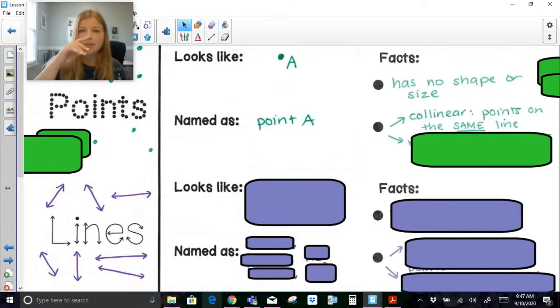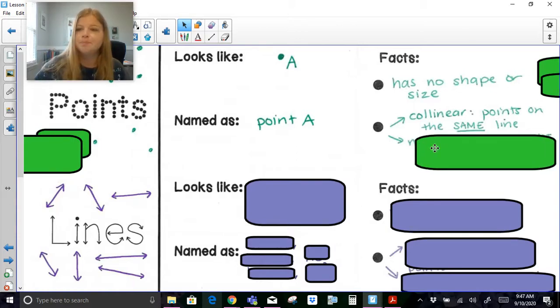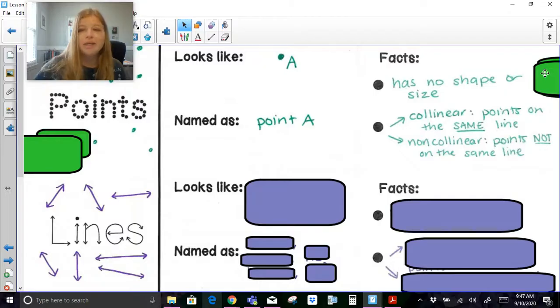Collinear means you have points on the same line. If I had a line with points on the same line, I would say those points are collinear. Non-collinear means you have points that are not on the same line. Think about the three points of a triangle. Those three points are definitely not on the same line.